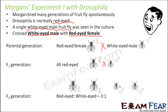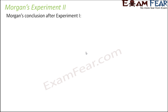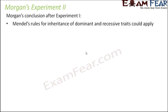An important observation was that all females of the F2 generation were red-eyed, but not all males were red-eyed. Only 50% of males were red-eyed while the remaining 50% of males were white-eyed. This made Morgan suspect that the trait might have some link with sex, since white eye color appeared only in males.